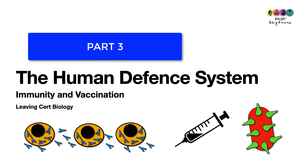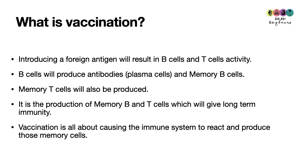This video is on immunity and vaccination and it's the third video in the human defense system. What is vaccination? The idea behind it is that you're introducing foreign antigens. If you're giving a baby a vaccine, you're going to introduce a foreign antigen — for example, the measles antigen — so you're going to give them a weakened dose of the measles virus.